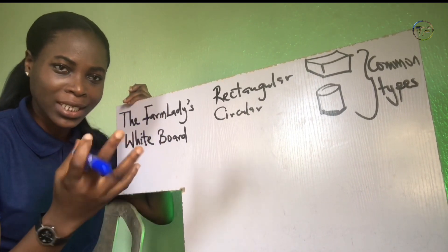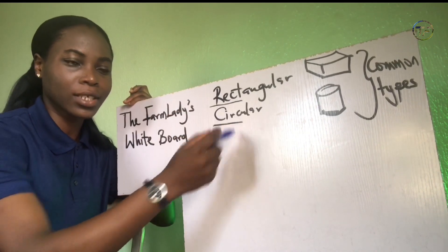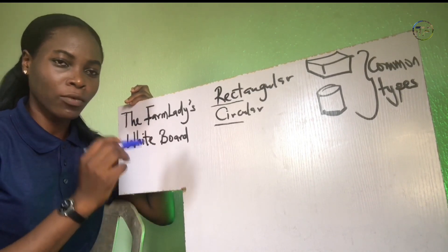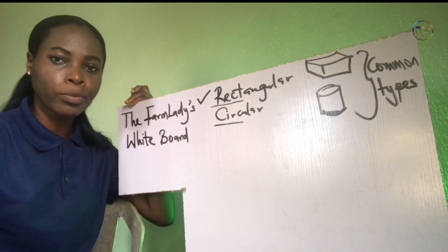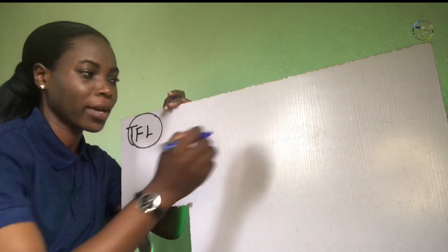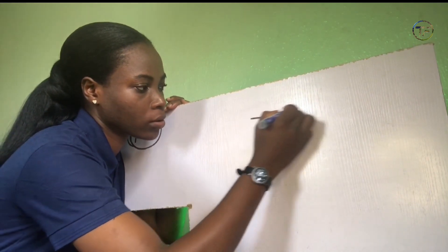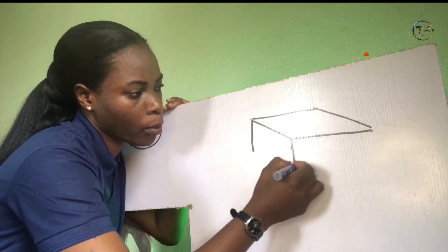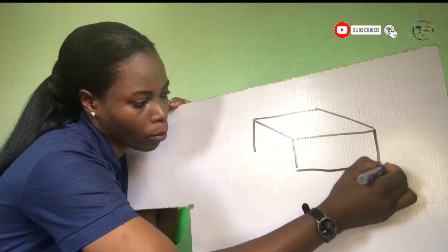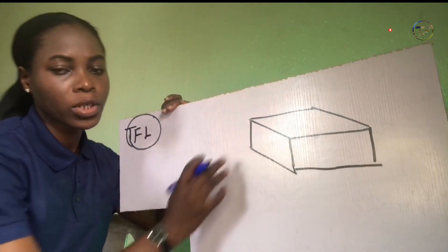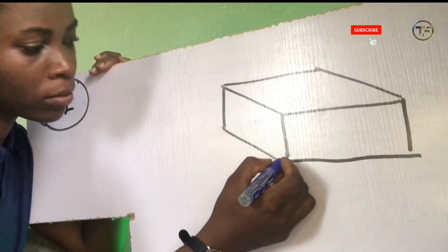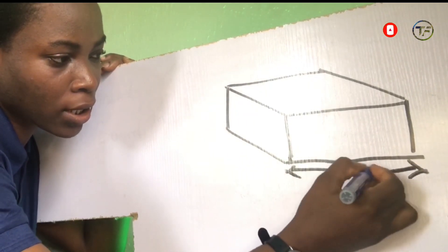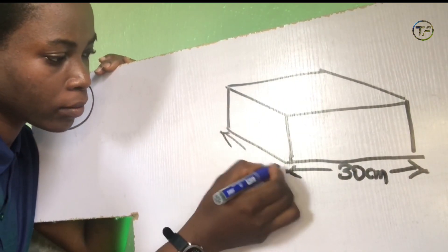Let's go right into how we can calculate the volume of water, first in a rectangular pond. If you have a rectangular pond, here is what it looks like. Now this is your rectangular pond. The length of this pond — let's assume it's 30 centimeters, the width 20 centimeters.